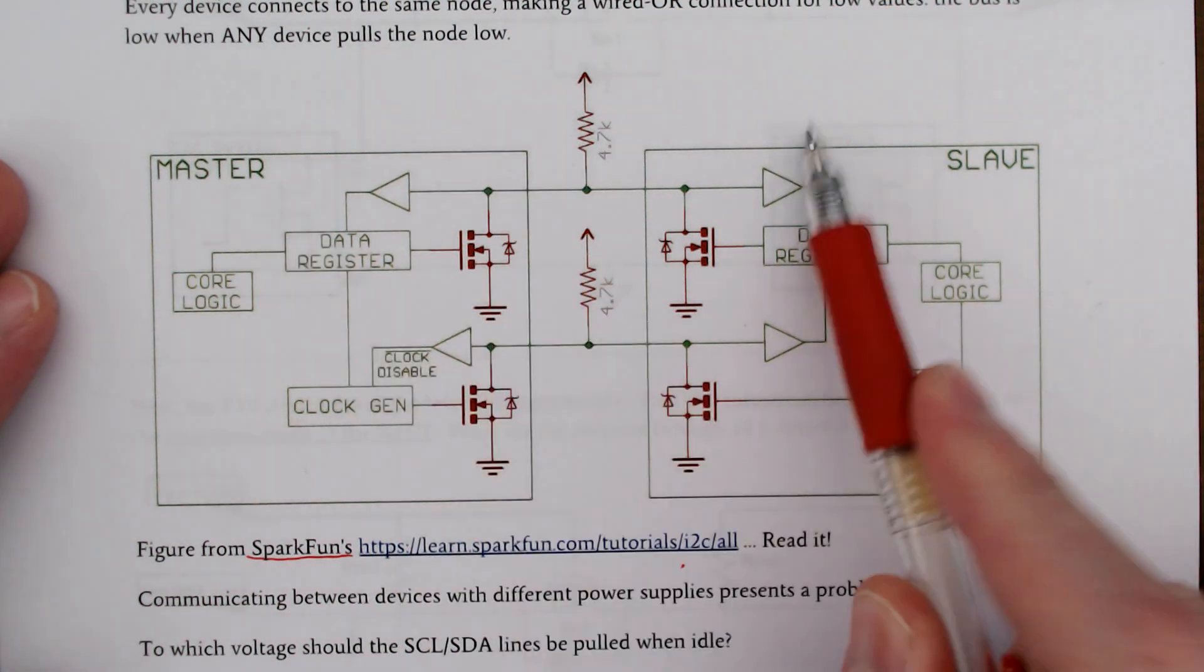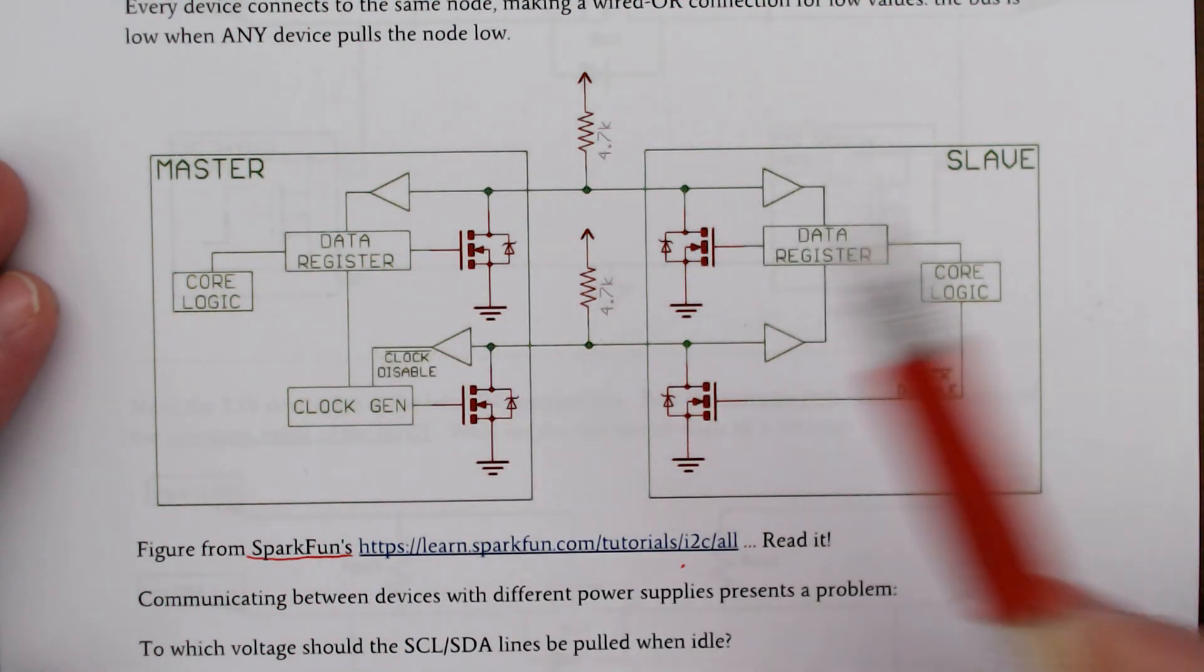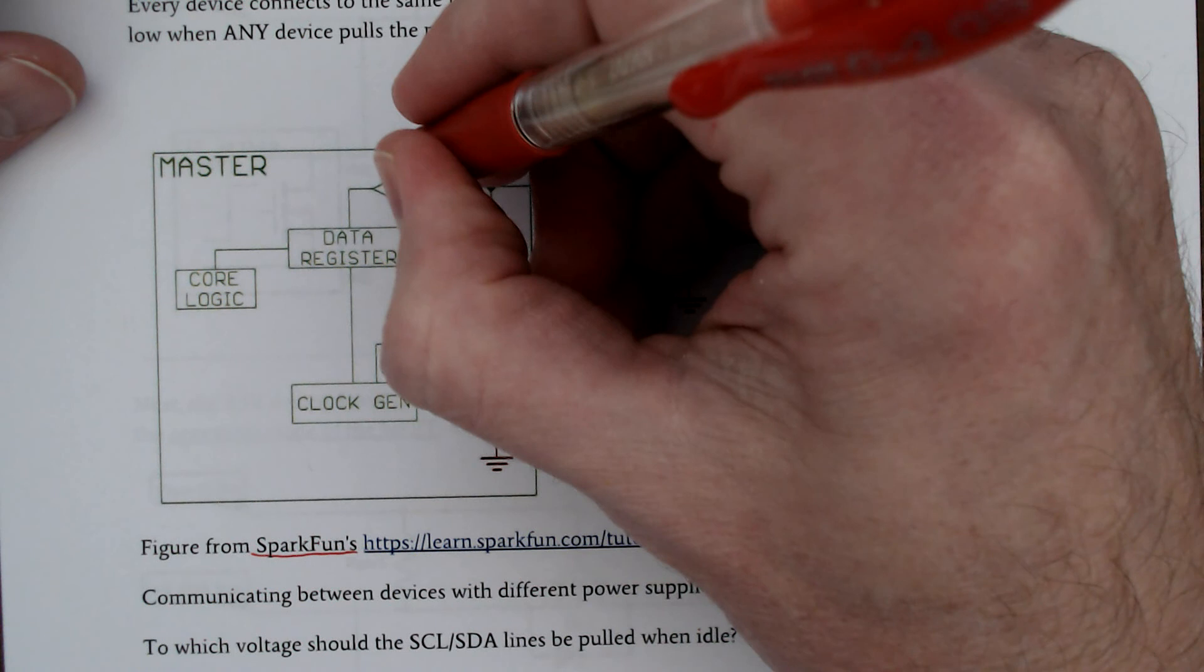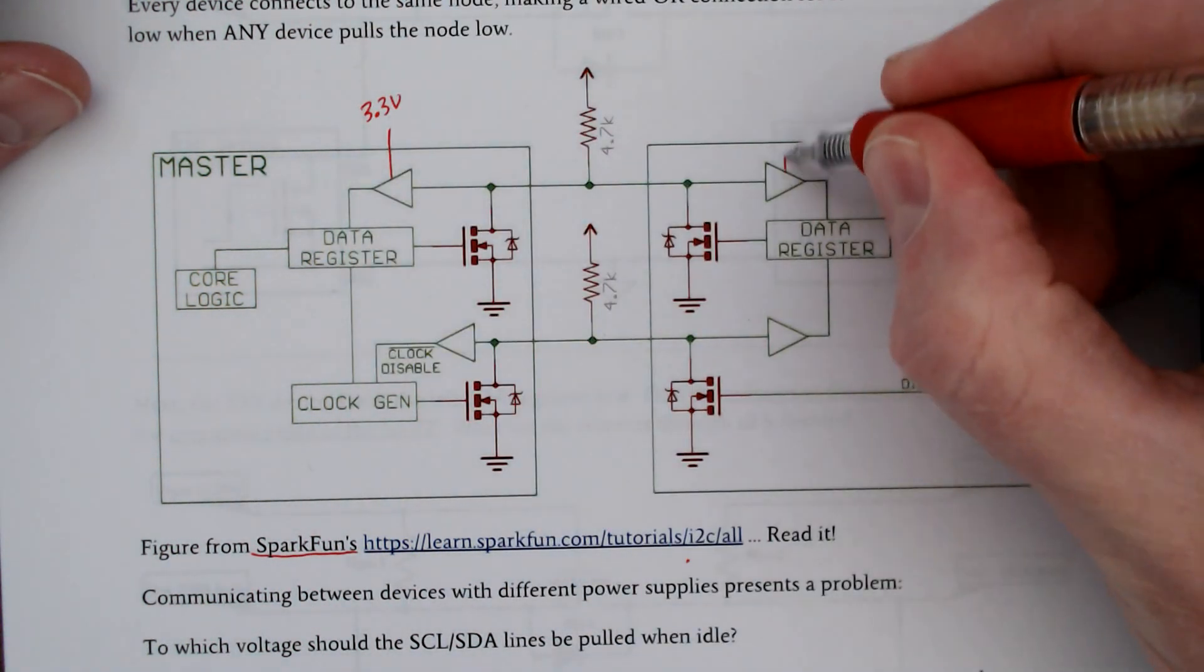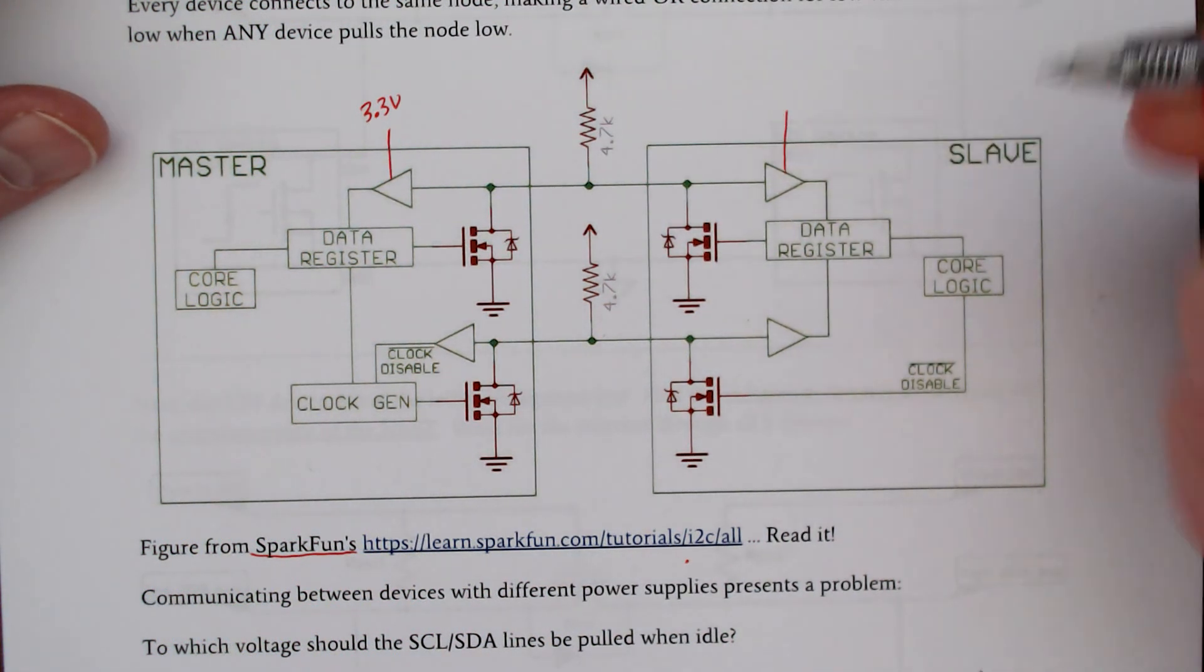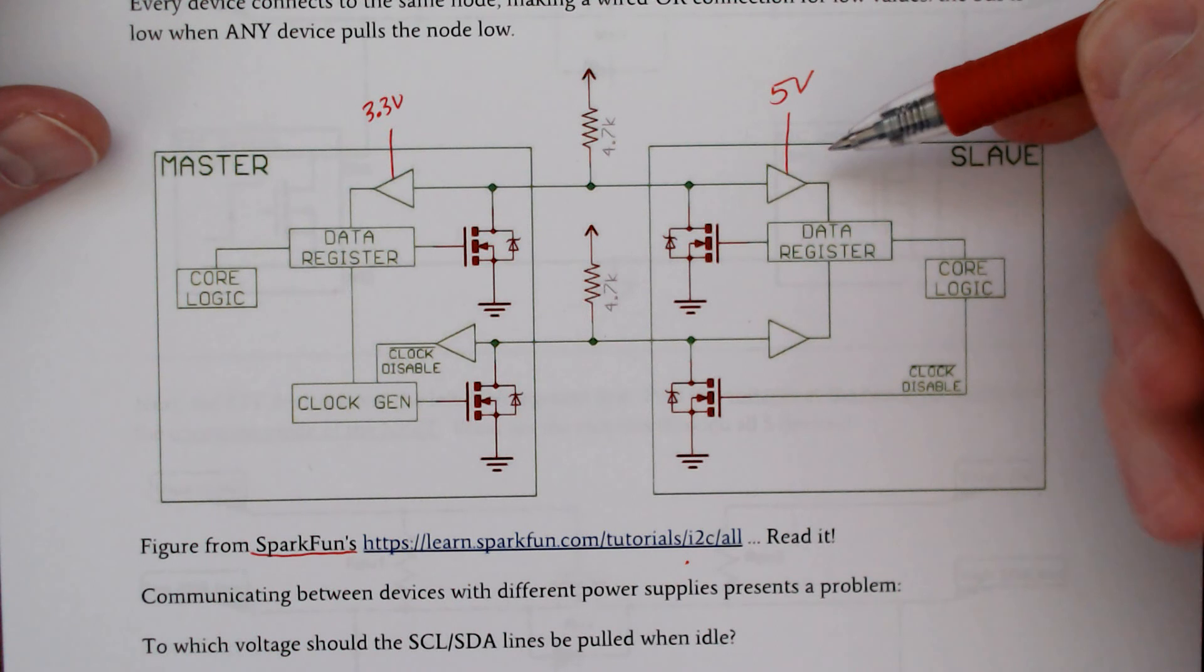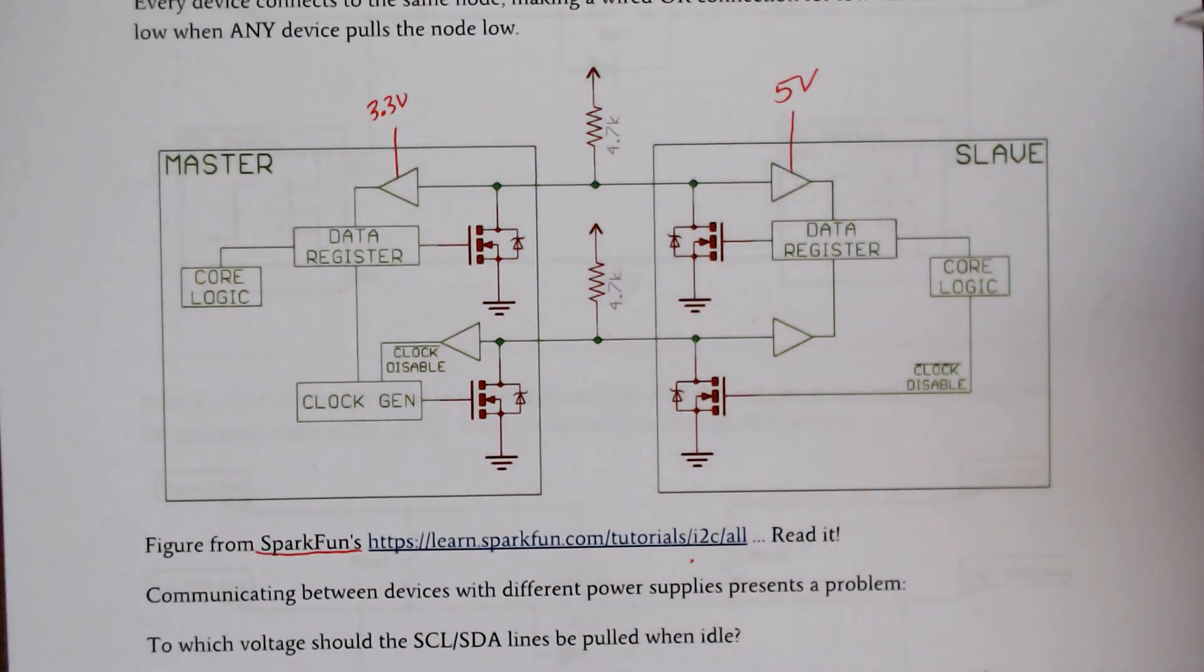Right now we don't really care about master and slave. We're looking at the electrical interface. This is all okay if your power supply is 3.3 volts and your power supply for the other side of your bus is also 3.3 volts. Let's say you want to talk to a 5 volt powered sensor device.